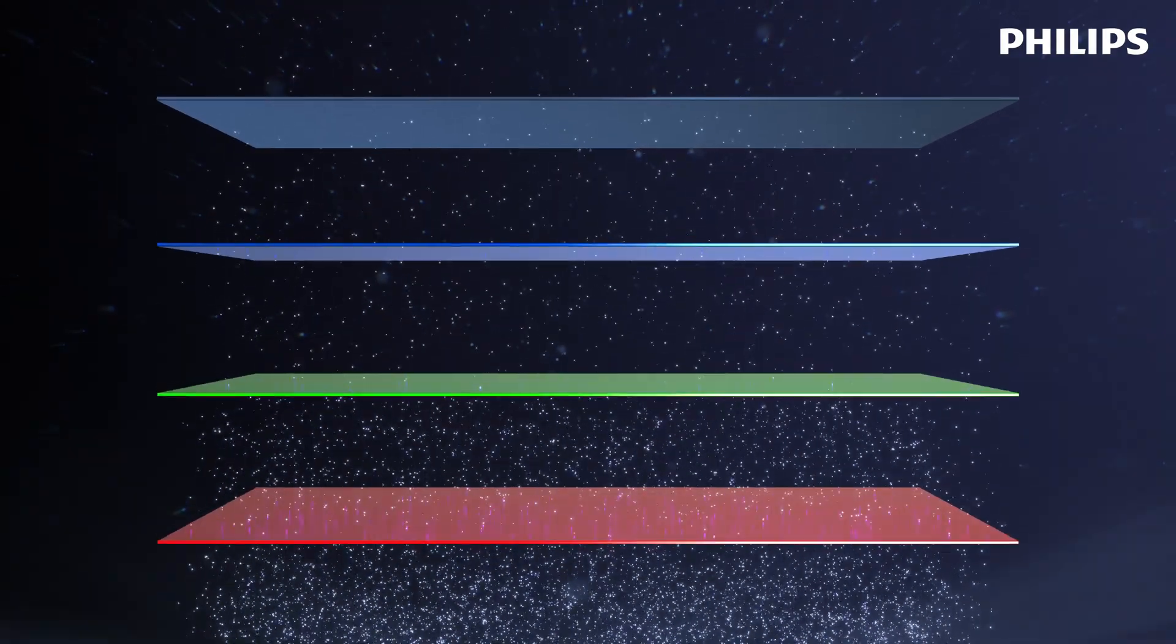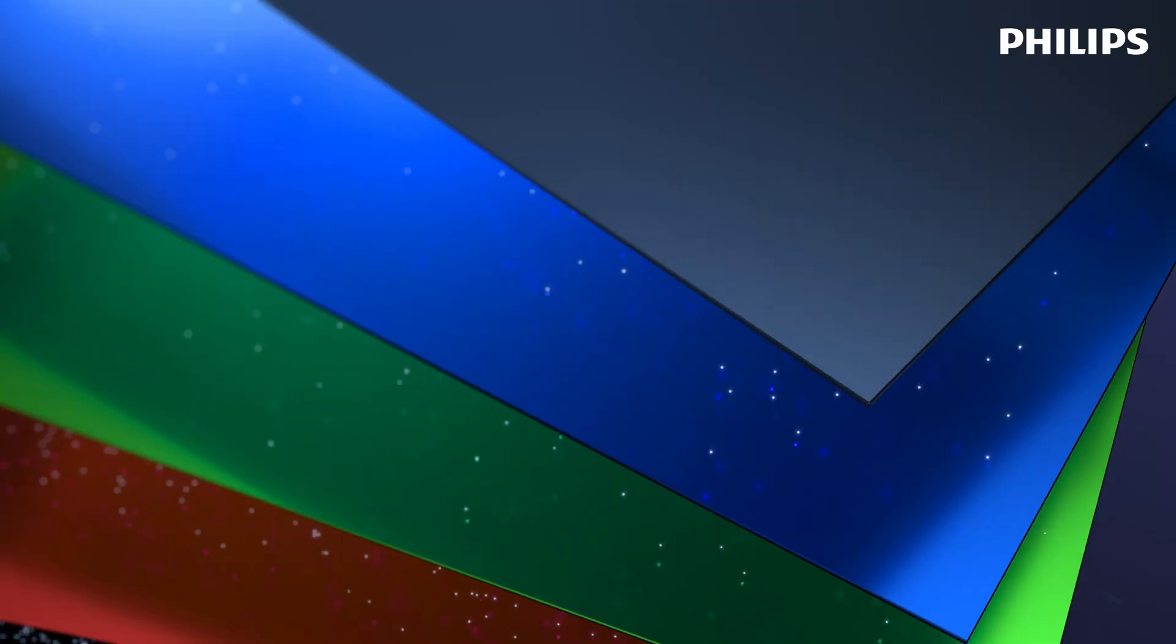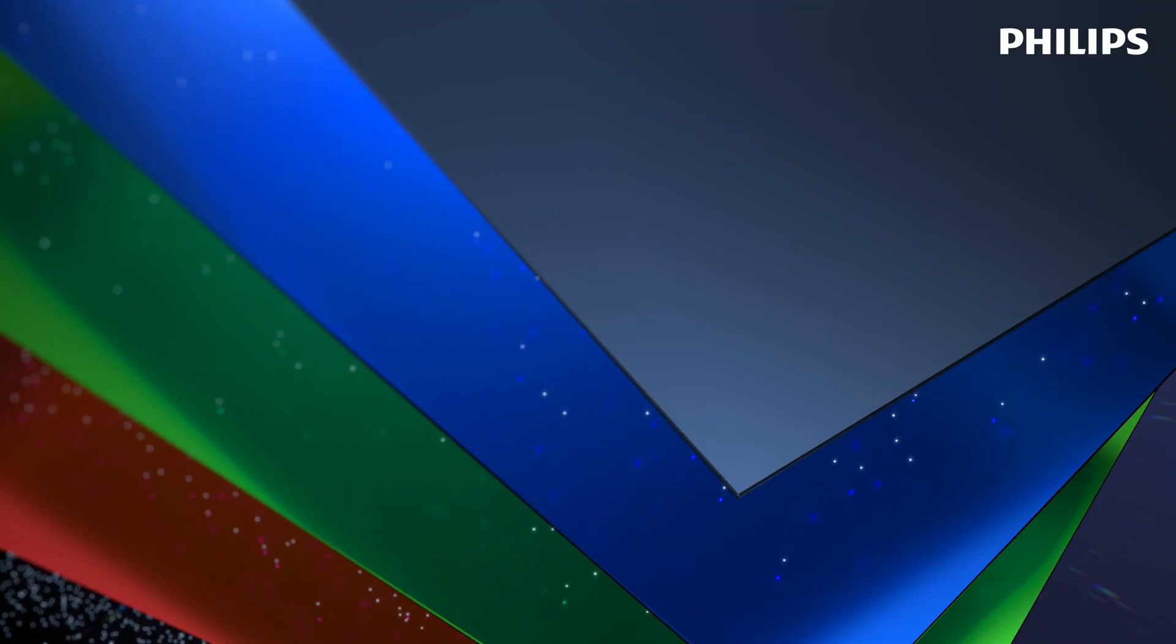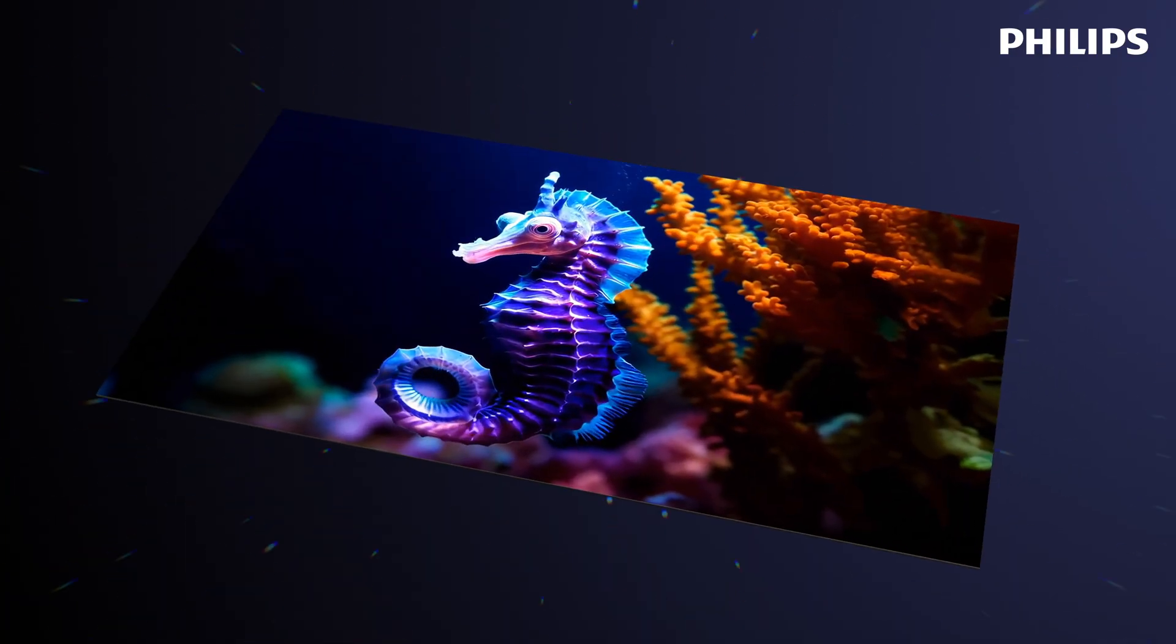The pictures you see on mini-LED TVs begin life as white light. Normal mini-LEDs pass the light through filters, which remove brightness, leaving the picture dull.